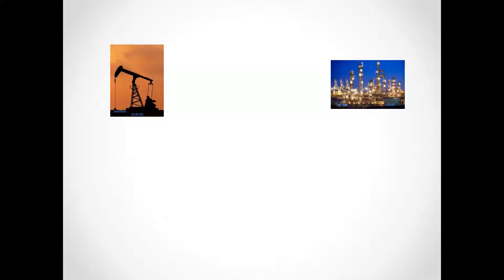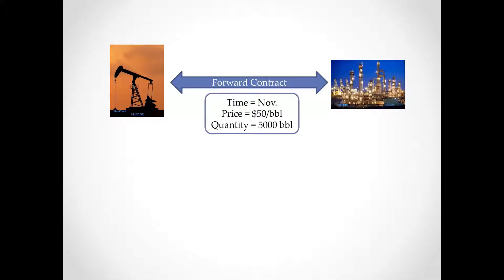The producer is concerned that if the price drops, they're going to lose money. On the other side, the refinery is concerned that if price goes up, they're going to lose money — they want to hedge their risk against price fluctuations. So what they can do is negotiate a contract called a forward. They discuss three things: time, price, and quantity. They sign a contract that sometime in the future, say in November, at a locked price of $50, the producer will deliver a specific quantity of crude oil — say 5,000 barrels — to the refinery. This is called a forward contract.